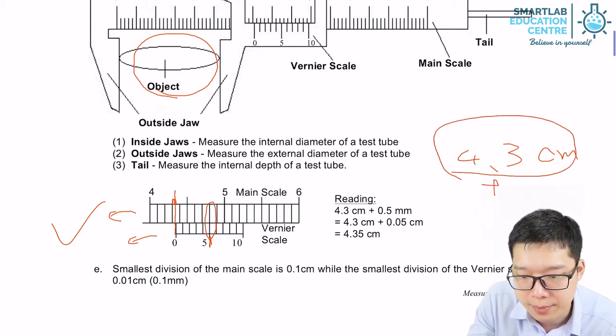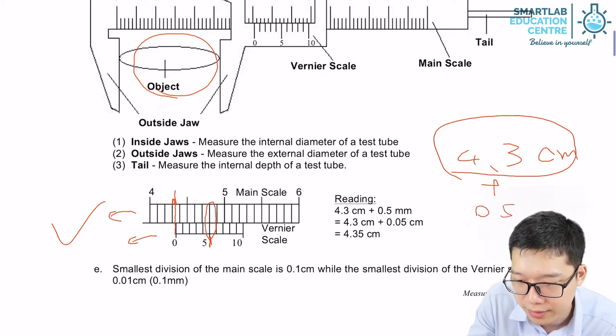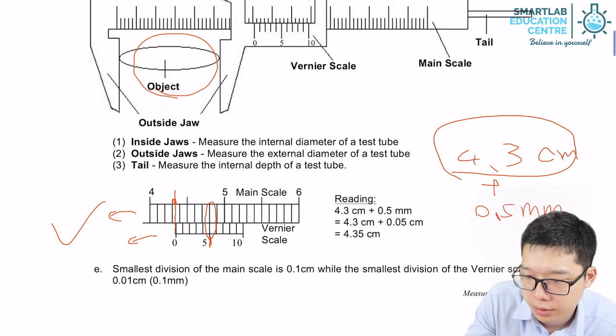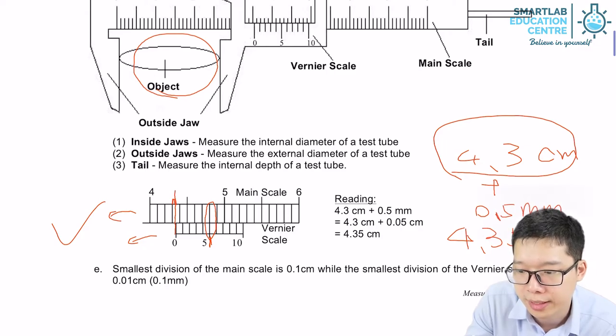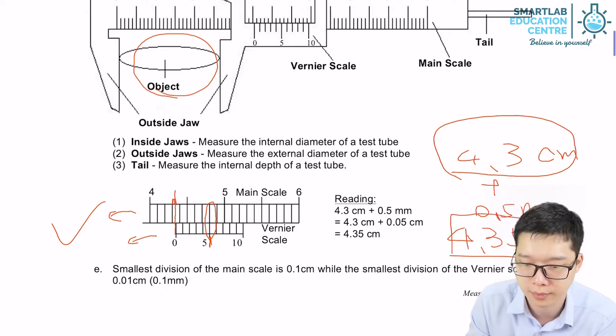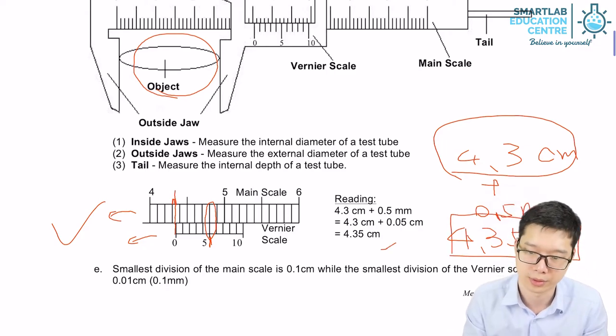That means from the main scale we have 4.3 cm, and the vernier scale is 0.5 mm. So the total is 4.35 cm.